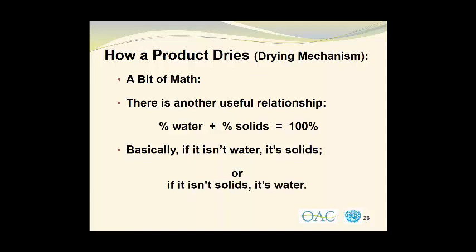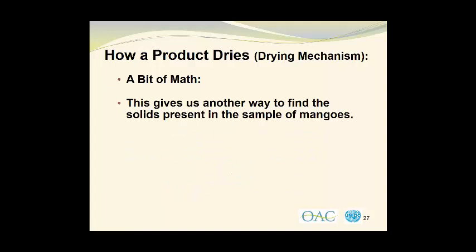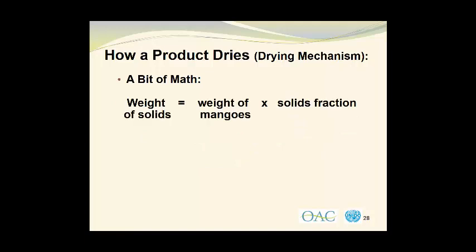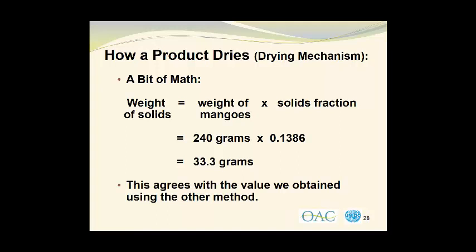This gives us another way to find the solids present. The percent solids equals 100% minus the percentage of water — that is 100% minus 86.14% water — which gives us 13.86% solids. The weight of solids equals 240 grams times 0.1386, giving us 33.3 grams of solids, which agrees with the value obtained using the other method.